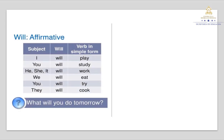I need that you look at this chart. We have the affirmative form. The affirmative form is very simple. We have the subject, the word 'will', and the verb in simple form. Read with me: I will play. You will study. He, she, it will work. We will eat. You will try. They will cook.